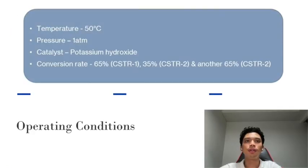Next, the operating conditions. The temperature is set at 50 degrees Celsius as the boiling point of methanol is 65 degrees Celsius. The pressure for this palm oil plant is 1 atm as a low pressure is needed for the plant to operate. The catalyst used is potassium hydroxide because it has a high conversion rate in transesterification reaction. The conversion rate for the first reactor is 65%, and the remaining 35% goes to the second reactor and undergoes another 65% conversion.